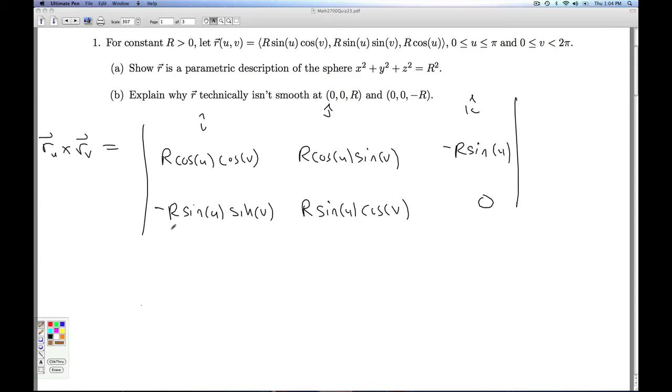All right, so let's see what we make of this huge cross product here. I wipe out the row and column that the i is in. I get 0 minus a negative times this. So this is going to be a positive r squared sine squared u cosine v.